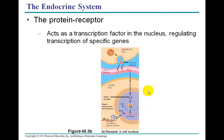The protein receptor, once it's inside the cell, has carried the hormone inside the cell and often acts as a transcription factor in the nucleus. It coordinates and regulates the transcription of specific genes that will then build specific proteins, which will then produce a specific response. Remember, this happens all with the aid of enzymes, so the process is extremely rapid.